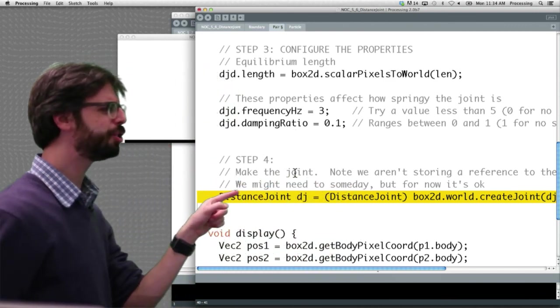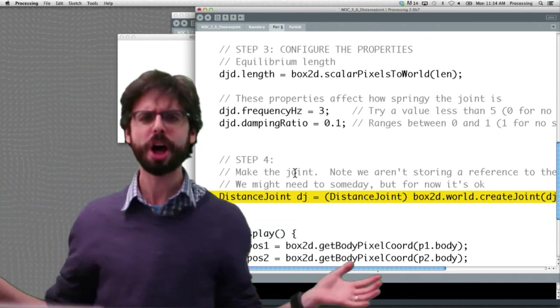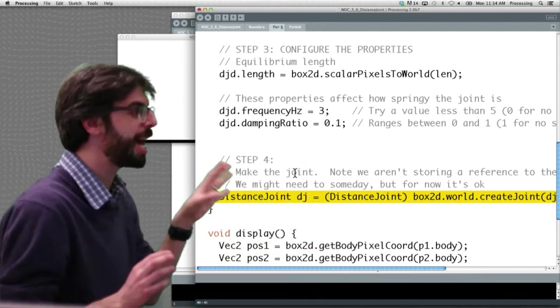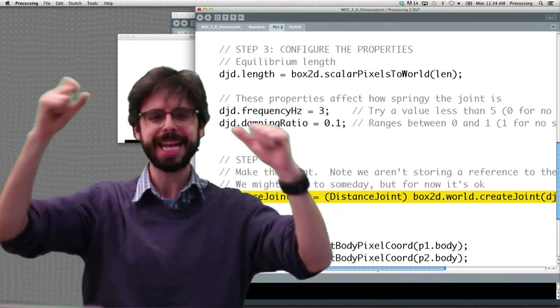Interestingly enough, though, look at this. DistanceJoint dj equals. This is a local variable, which means it's gone the moment after we create that joint. And I should just point out, in this example, that's okay. All we wanted to do in this example was create a joint that connects those two bodies.